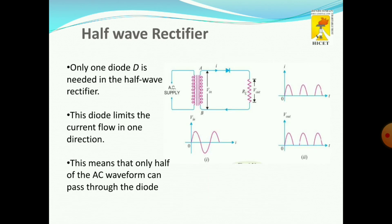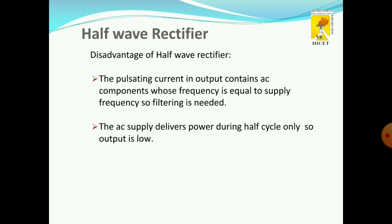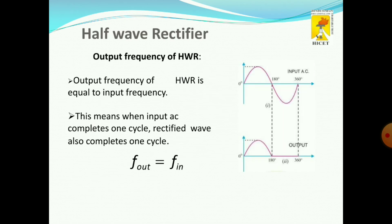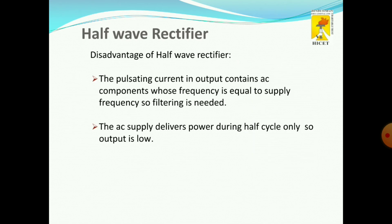One diode is needed in the half wave rectifier so that the diode limits the current flow in one direction. This is the output of the rectifier: during the positive half cycle the output is generated, and during the negative half cycle the output is not generated.